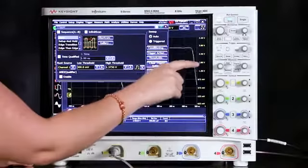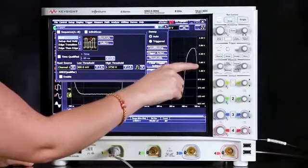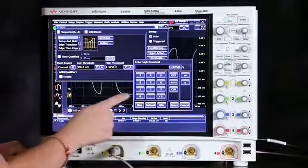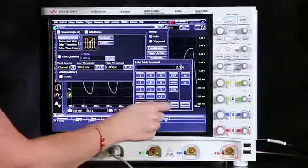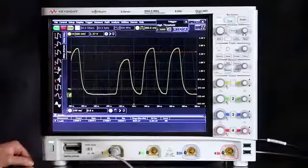And we said we thought it looked like it was between 1.88 volts and 2.38 volts. So let's just set it for 2.5 volts to be sure we're above the runt. And it looks like we're capturing those runts.